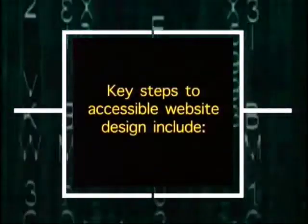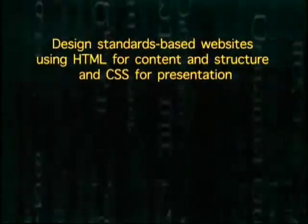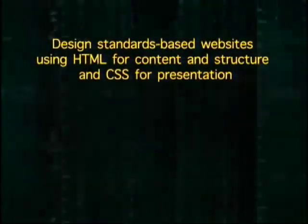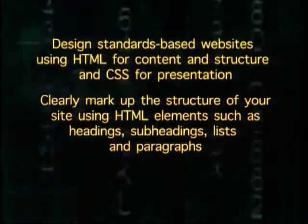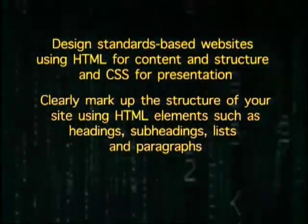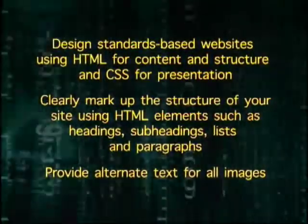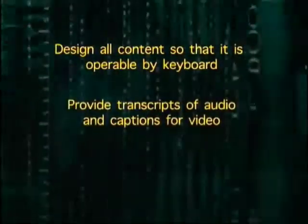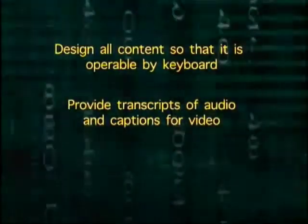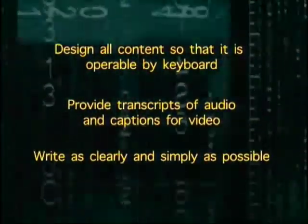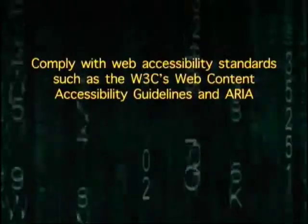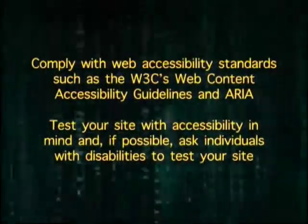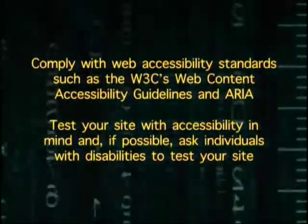Key steps to accessible website design include: design standards-based websites using HTML for content and structure and CSS for presentation; clearly mark up the structure of your site using HTML elements such as headings, subheadings, lists, and paragraphs; provide alternate text for all images; design all content so it's operable by keyboard; provide transcripts of audio and captions for video; write as clearly and simply as possible; comply with web accessibility standards such as WCAG and ARIA; and test your site with accessibility in mind — if possible, ask individuals with disabilities to test your site.